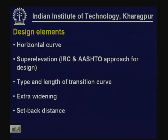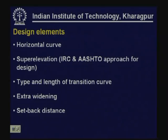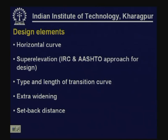Let us look at various design elements related to horizontal alignment. They include horizontal curves, because a road can never be perfectly straight and a straight road is not preferable from a safety point of view. A road essentially consists of a number of tangents and curves. With curves, one should understand the concept of super elevation and the basis for providing it. Super elevation is another design element.